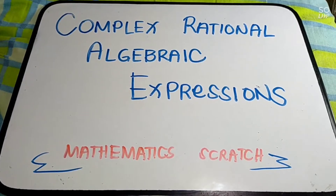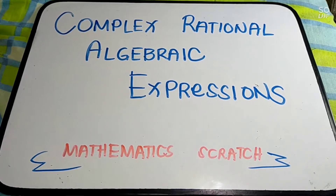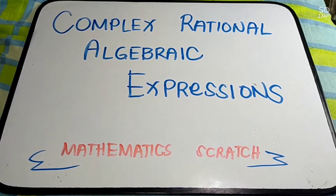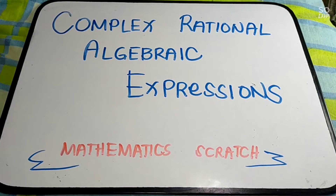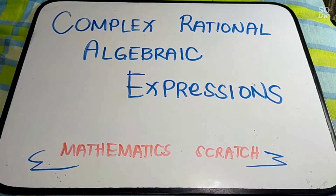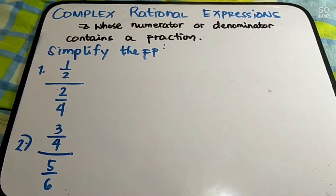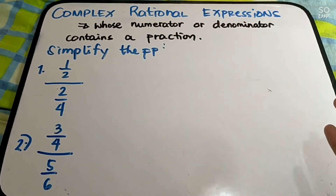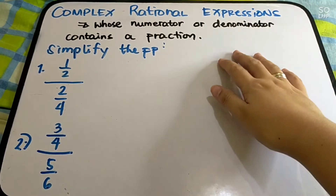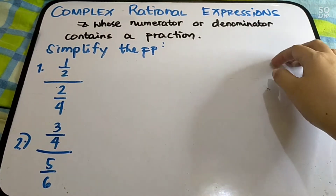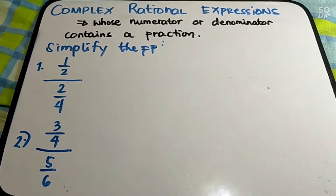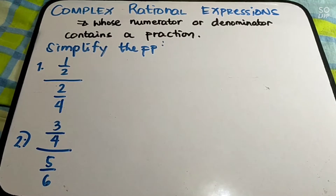Hi guys! Good day! In this session, we are going to discuss about Complex Rational Algebraic Expressions. When you say Complex Rational Expressions, these are expressions whose numerator or denominator contains a fraction — fractions over fractions.